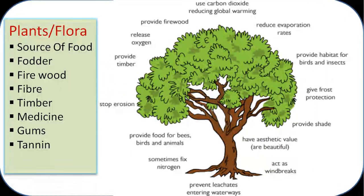Plants give us food, fodder, firewood, fibre, timber, medicine, gums, and tannin — these are all materialistic things. Other than these, plants have aesthetic value, act as windbreaks, provide shade, give frost protection, provide us with oxygen, stop erosion, and fix nitrogen.